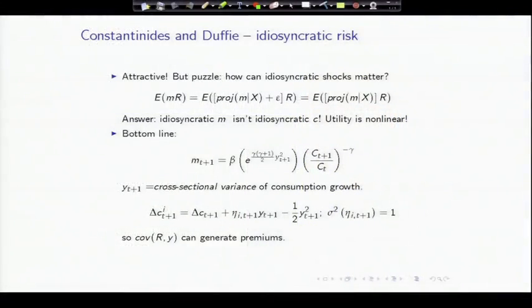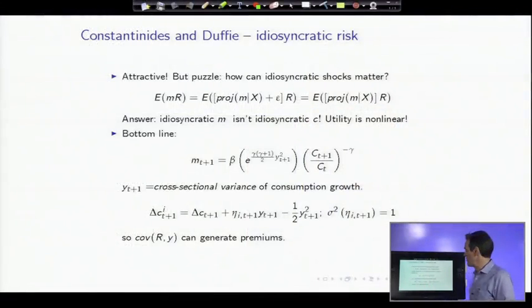After all, we've been looking at aggregate consumption. None of us—all of us have our own peculiar risks. Maybe the fact that we have individual risks that aren't perfectly insured, that's the central thing wrong with the model, and that fixing that will help us reconcile the model with the data. That's a very attractive idea. Each of us does have a lot of idiosyncratic risk. If the central problem of the equity premium was that consumption growth wasn't volatile enough, well, individual consumption growth is much more volatile than 2%.